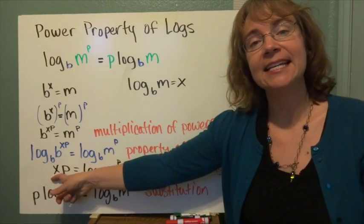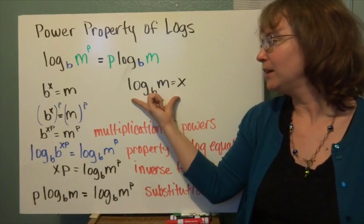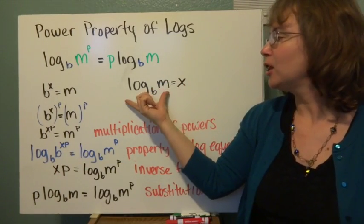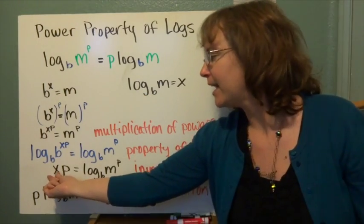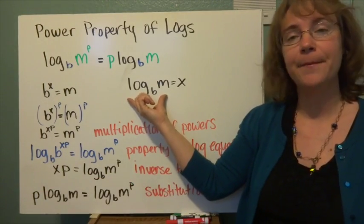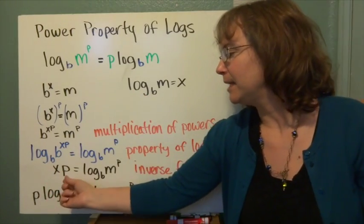Now what I can do is take this x up here and substitute log base b of m for x. So when doing so, instead of x, I have log base b of m times p.